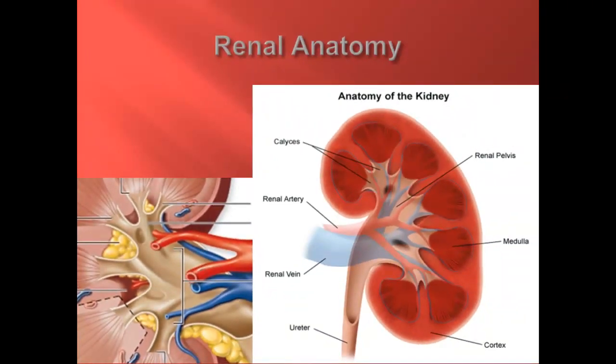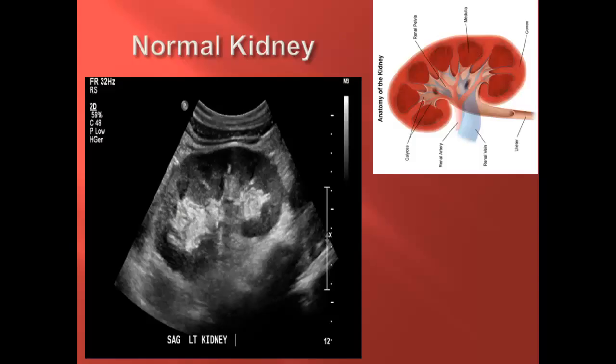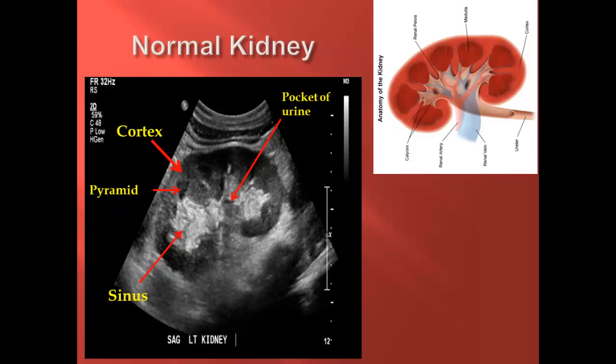Please take a moment to familiarize yourself with the components of normal renal anatomy. Here we have a sonographic representation of a normal left kidney in the sagittal plane. A simplified schematic is provided in the upper right corner for comparison. You can appreciate that the renal cortex is of similar echogenicity to the adjacent liver or spleen, and that the fluid-filled medullary pyramids are demonstrated in a regular arrangement around the sinus. The central echoes from the renal sinus are hyperechoic or bright due to fat content and the sinus is appropriately collapsed and homogenous in the absence of obstruction. Note that one can normally see small, dark pockets of urine within the bright sinus, and that the ureter is often obscured by bowel gas and not visible on ultrasound unless dilated.